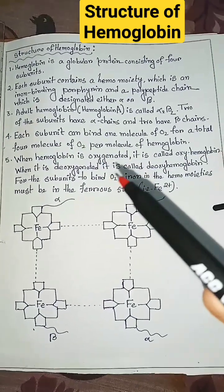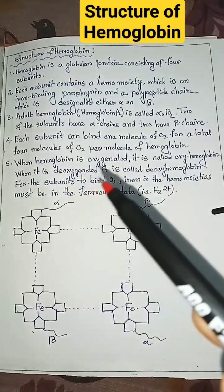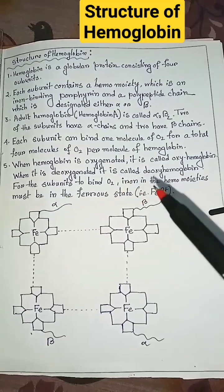When hemoglobin is oxygenated, it is called oxyhemoglobin. When it is deoxygenated, it is called deoxyhemoglobin.